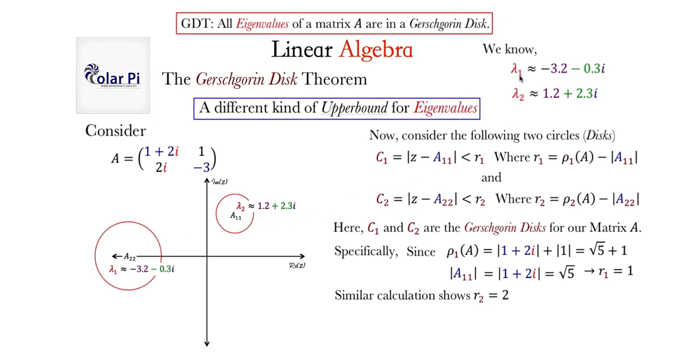Now if you plot these two eigenvalues, negative three point two comma negative zero point three would be roughly somewhere right here, and that's contained in this Gershgorin disk. And then the other eigenvalue, this guy, one point two comma two point three in the complex plane would be like one point two - that's a little to the right of one here - and then two point three somewhere over here. So you can clearly see that both of these eigenvalues are contained in the two different Gershgorin disks that we have. And so exactly as it says, all eigenvalues of matrix A are contained in a Gershgorin disk.